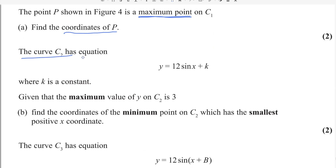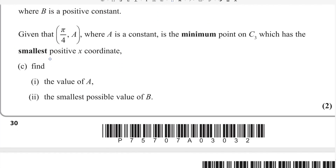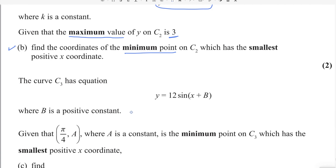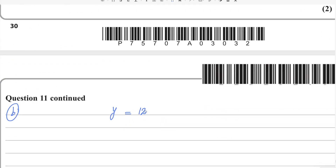The curve C2 has equation y equals 12 sin x plus k, where k is a constant. Given that the maximum value of y on C2 is 3, find the coordinates of the minimum point on C2 which has the smallest positive x-coordinate.